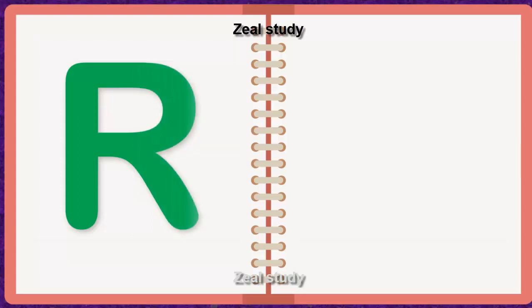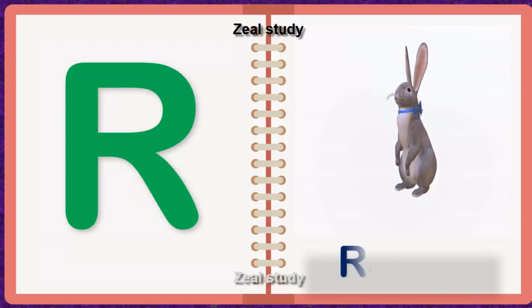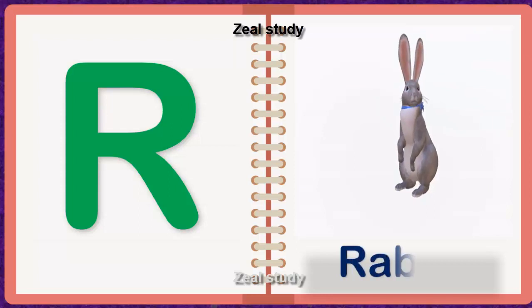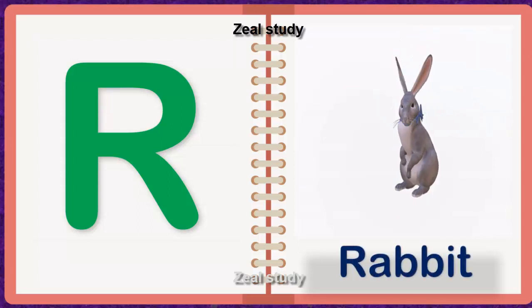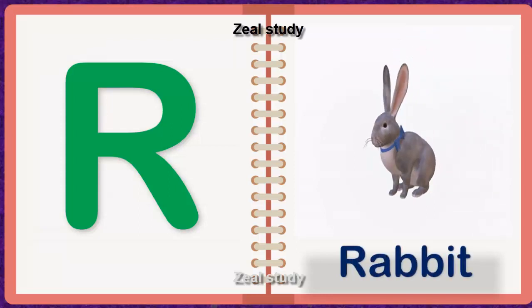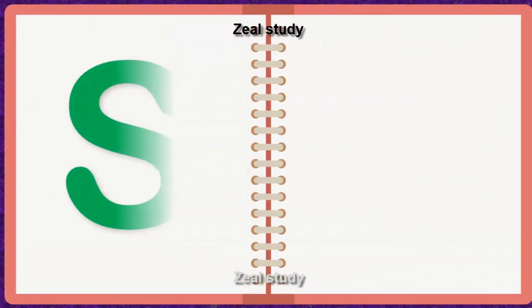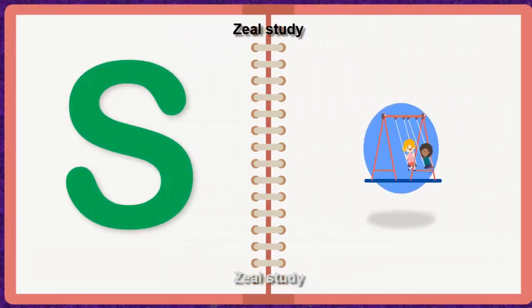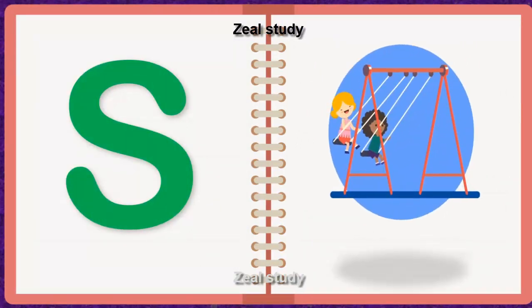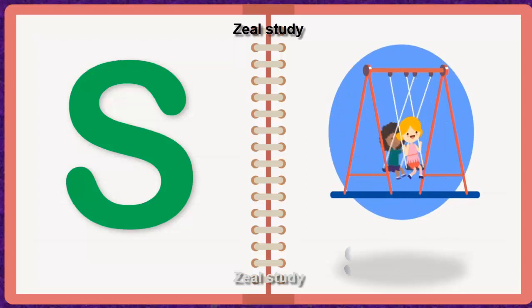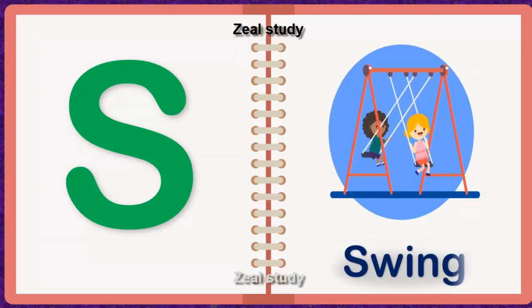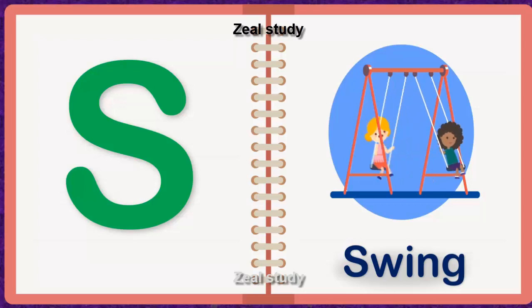R for Rabbit. R, A, B, B, I, T. Rabbit. S for Swing. S, W, I, N, G. Swing.